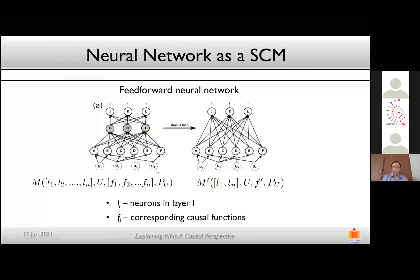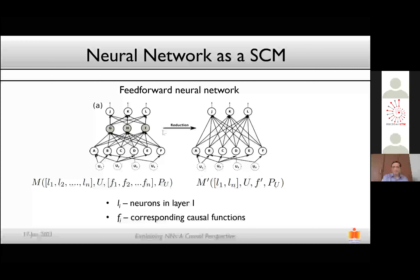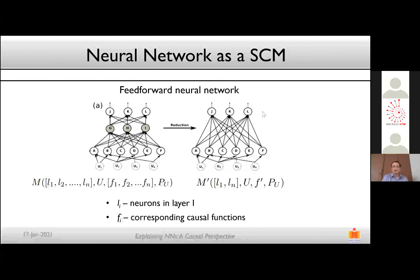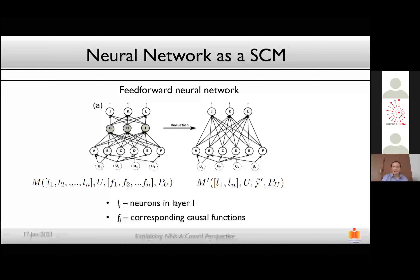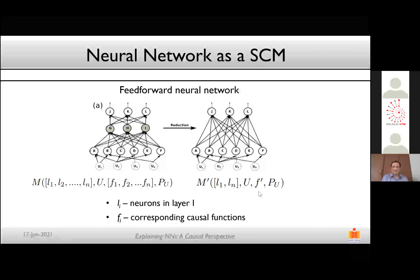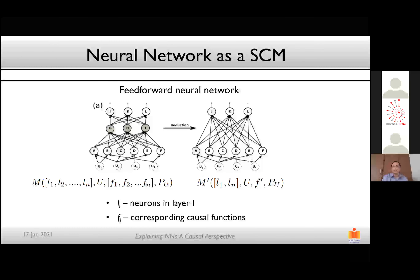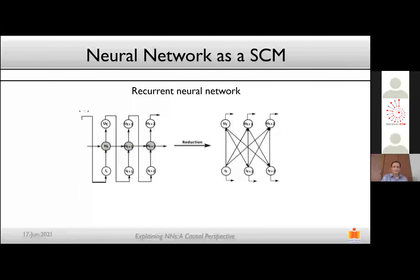We view the neural network as an SCM where neurons A, B, C, D, E, F are input neurons, J, K, L are output neurons, and U1, U2, U3, U4 are unobserved confounders. By marginalizing out the hidden layers, we can reduce this SCM to a relationship between only input and output variables. We call this reduced model M', where L1 is the input layer, Ln is the output layer, and F' are the causal functions showing how J, K, L were caused by the inputs.